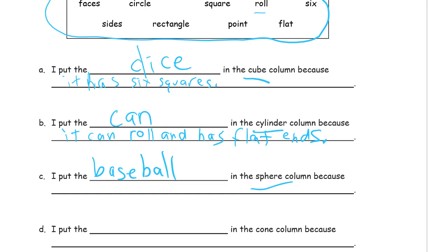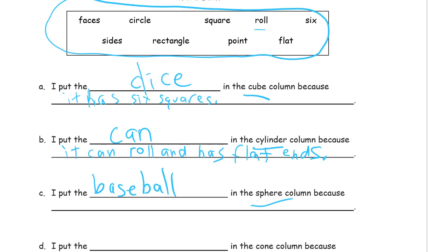In the sphere column because let's see. It is, it is round, it rolls, right? Because I'm looking at the words up here in the word bank is round, it rolls, and has no flat sides. Or actually, they should be faces, not sides, right? It has no flat faces.